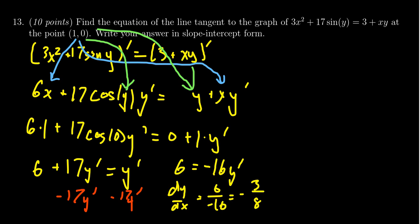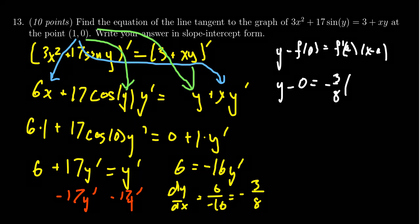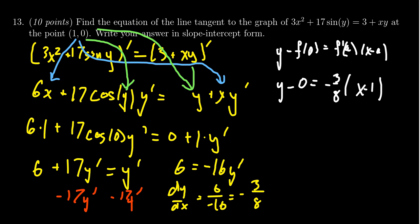Now we want to come up with our tangent line. The tangent line is going to look like y - f(a) = f'(a)(x - a), where a and f(a) are the point of tangency. So we get y - 0 = -3/8(x - 1). Distribute the -3/8. We get y = -3/8 x + 3/8. This is our correct tangent line equation written in slope-intercept form.